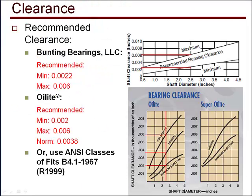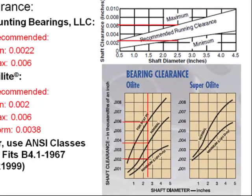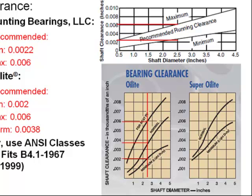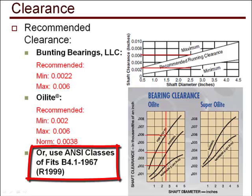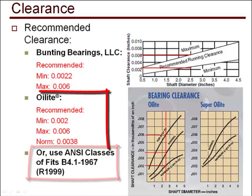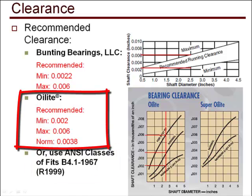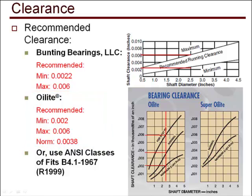After the bearing is assembled in the housing, there has to be clearance between the journal and the bearing ID for proper operation. What should the running clearance be? Bunning and Oilite have different values for clearance, but they are very close. We could use the ANSI classes of fits from the standard shown, but we are going to use what Oilite recommends.